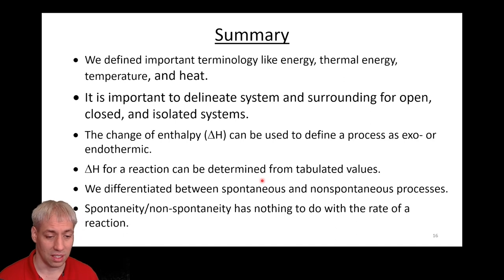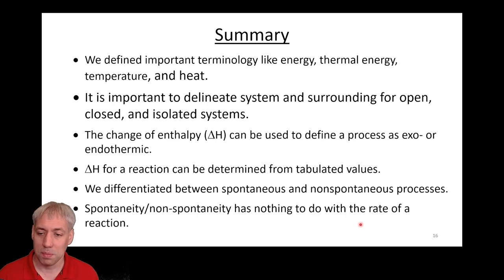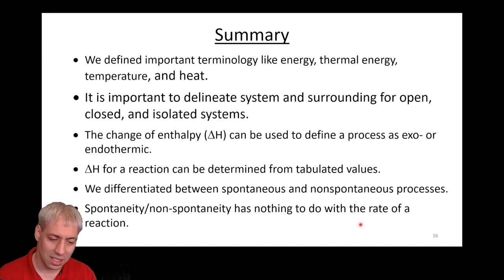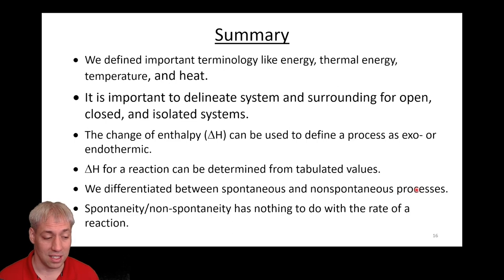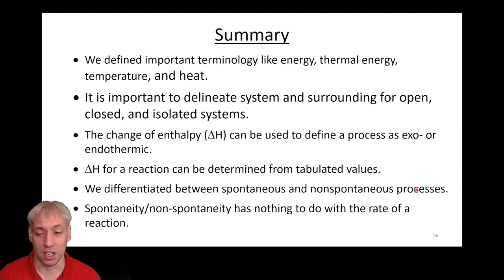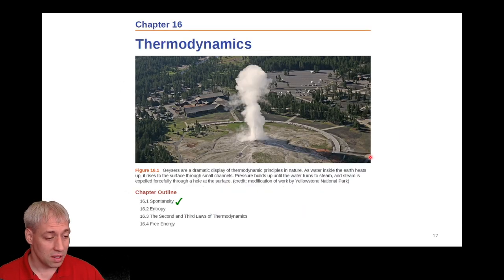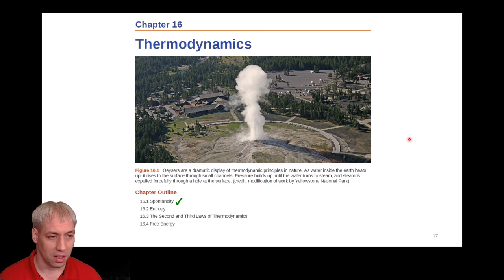We can calculate delta H from tabulated values: products minus reactants gives us delta H of reaction and tells us whether it's exothermic or endothermic. We also talked about spontaneous versus non-spontaneous: spontaneous means it will happen under a given condition; non-spontaneous means it won't. If the forward process is spontaneous, the reverse is non-spontaneous. Spontaneity has nothing to do with the rate of reaction. Next we'll dive into entropy — the other piece of the puzzle needed to determine whether a reaction will be spontaneous or non-spontaneous.